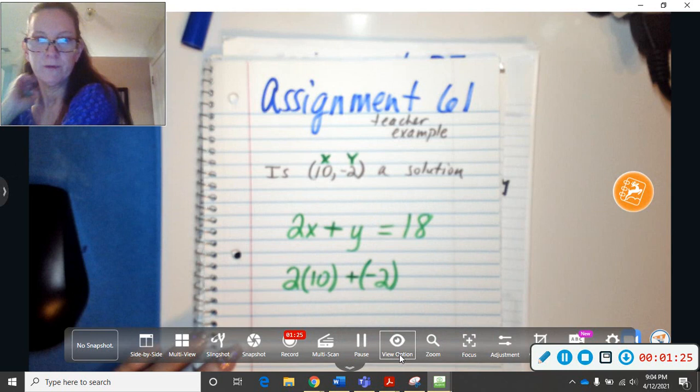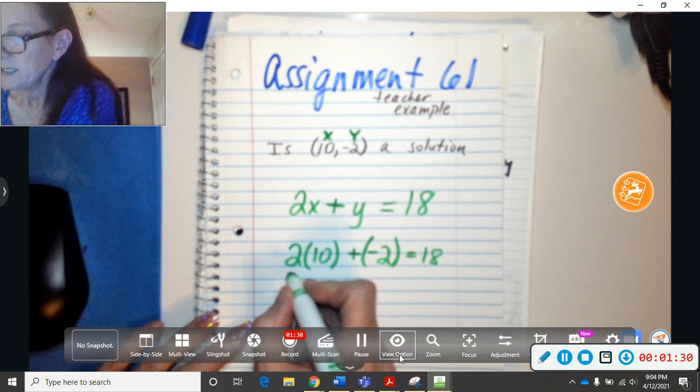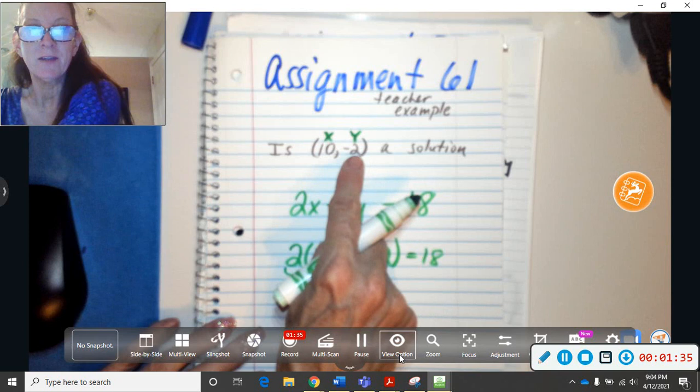Now you can use the calculator. 2 times 10 is 20. Now you have to watch your signs. Anytime you're going to have a negative number involved, you need to watch your signs.